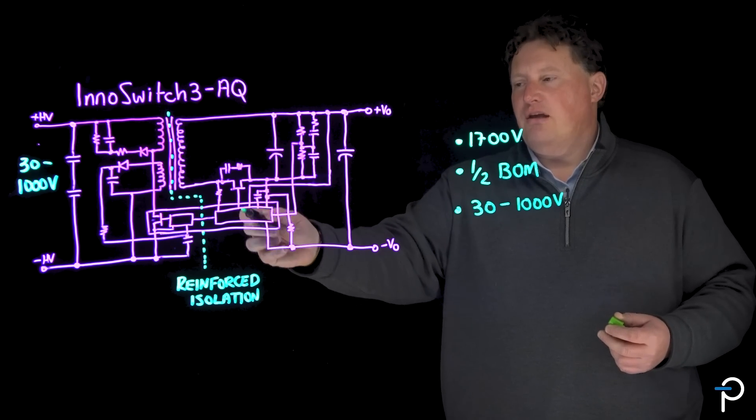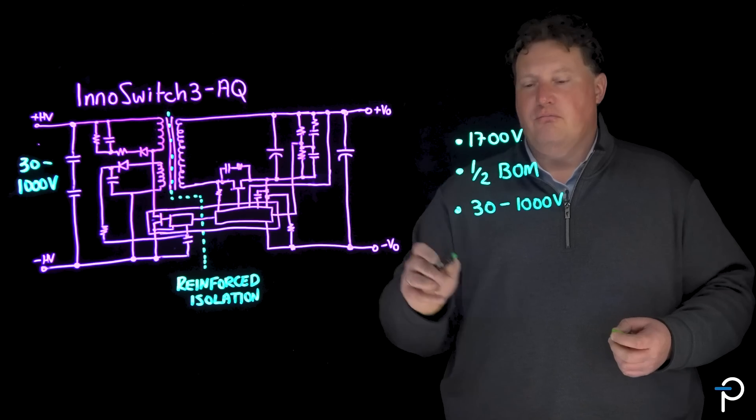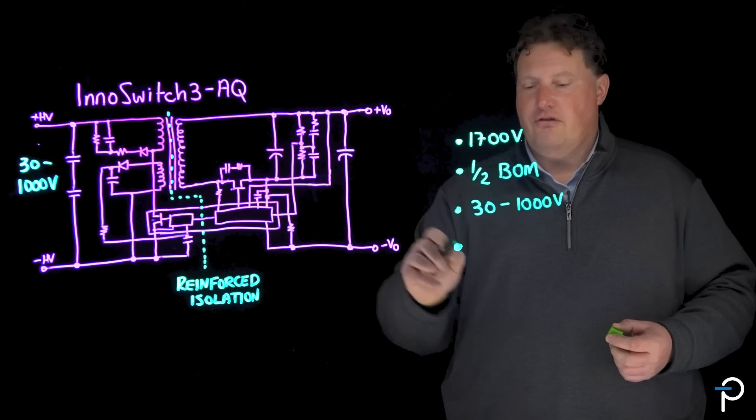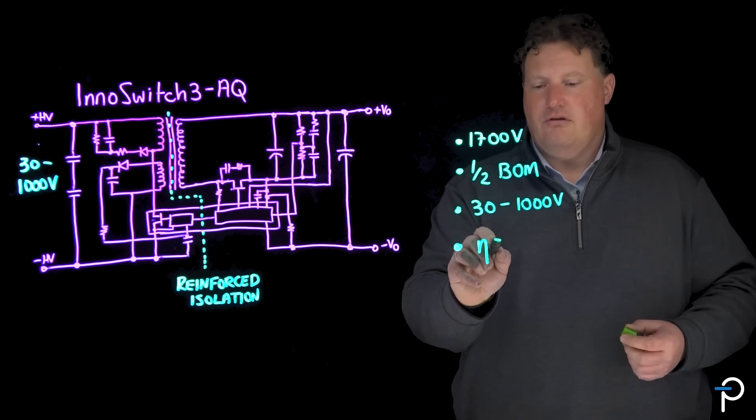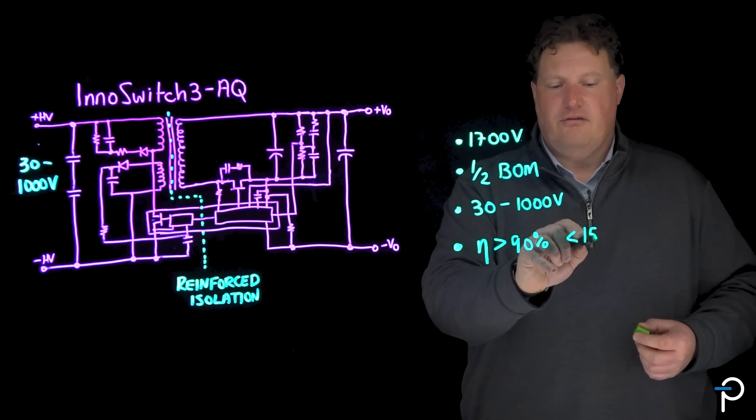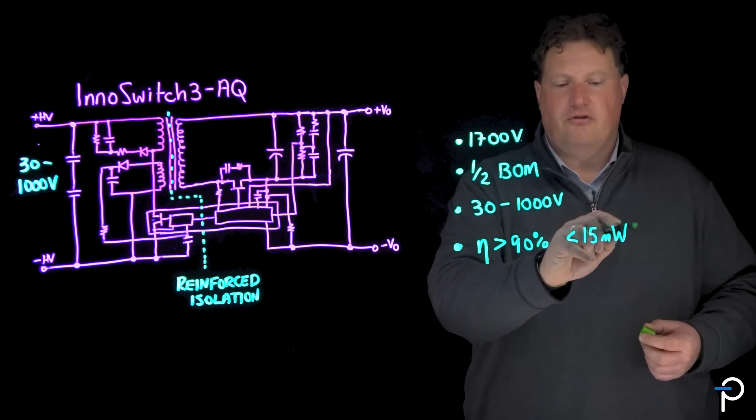The InnoSwitch3-AQ secondary side regulation brings system performance advantages. For example, the use of synchronous rectification increases efficiency to over 90%, while still enabling less than 15 milliwatt no-load consumption, which is ideal for BMS systems.